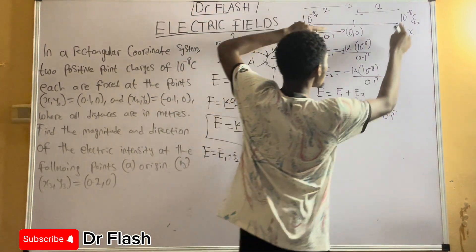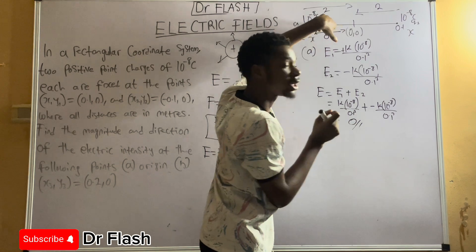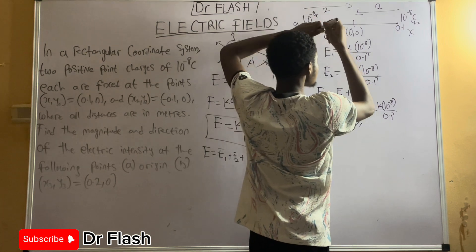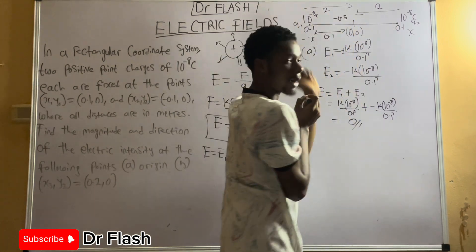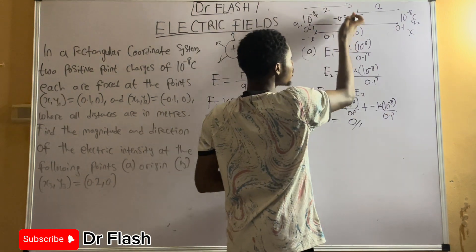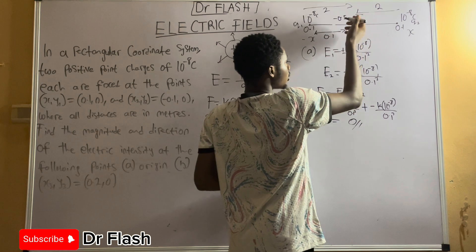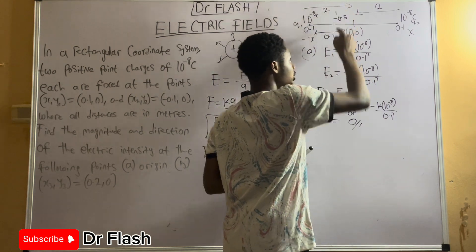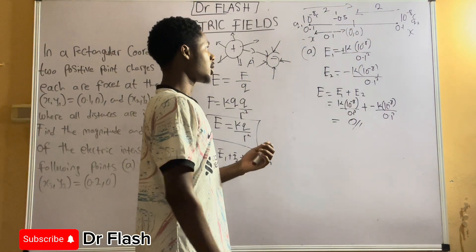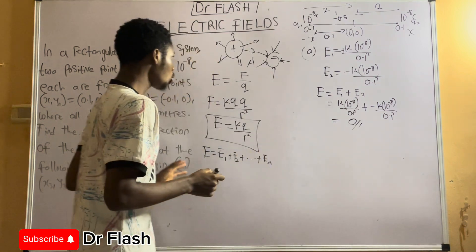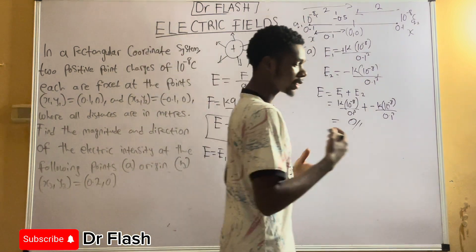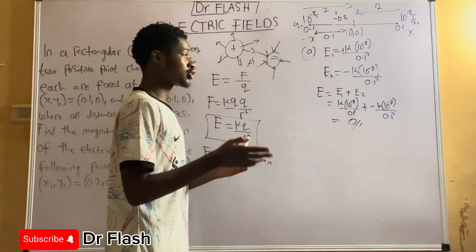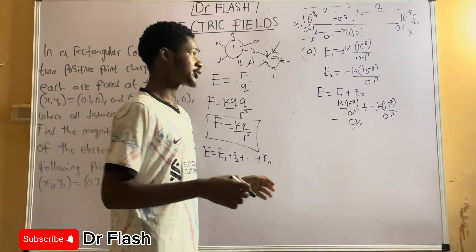For a point away from the midpoint, as one charge's field decreases with distance (say to 0.5 units), the other charge's field at that point may still be larger (say 1 unit), so they don't cancel. I encourage you to go through the examples again; the explanation helps you get a good understanding of how to solve problems like this, which are among the first exercises you encounter when studying electric fields under static electricity.